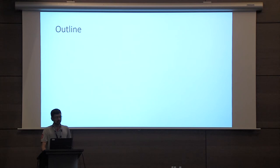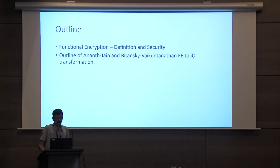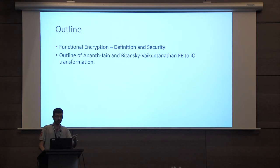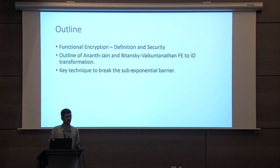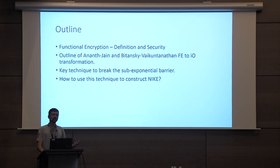The outline of the rest of the talk is as follows. I'll start with the notion of functional encryption, giving some intuitive definition and security. I will then give a brief outline of the Ananth-Jain and Bitansky-Vaikuntanathan FE-to-IO transformation and explain why this approach incurs a sub-exponential loss in security. I'll then give the key technique we use to break this sub-exponential barrier for certain applications of IO by modifying the FE-to-IO transformation approach, and then show how to use this technique to construct the non-interactive key exchange protocol.